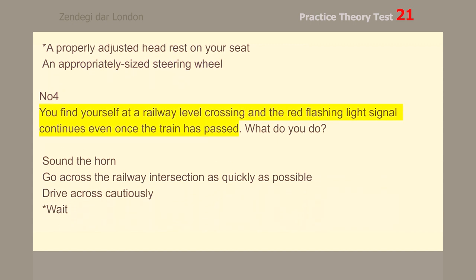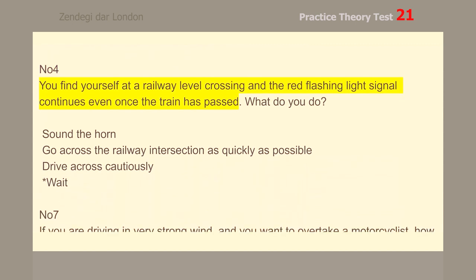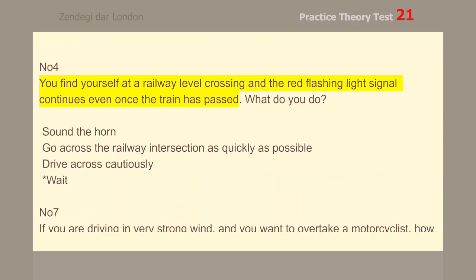Number 4. You find yourself at a railway level crossing and the red flashing light signal continues even once the train has passed. What do you do?